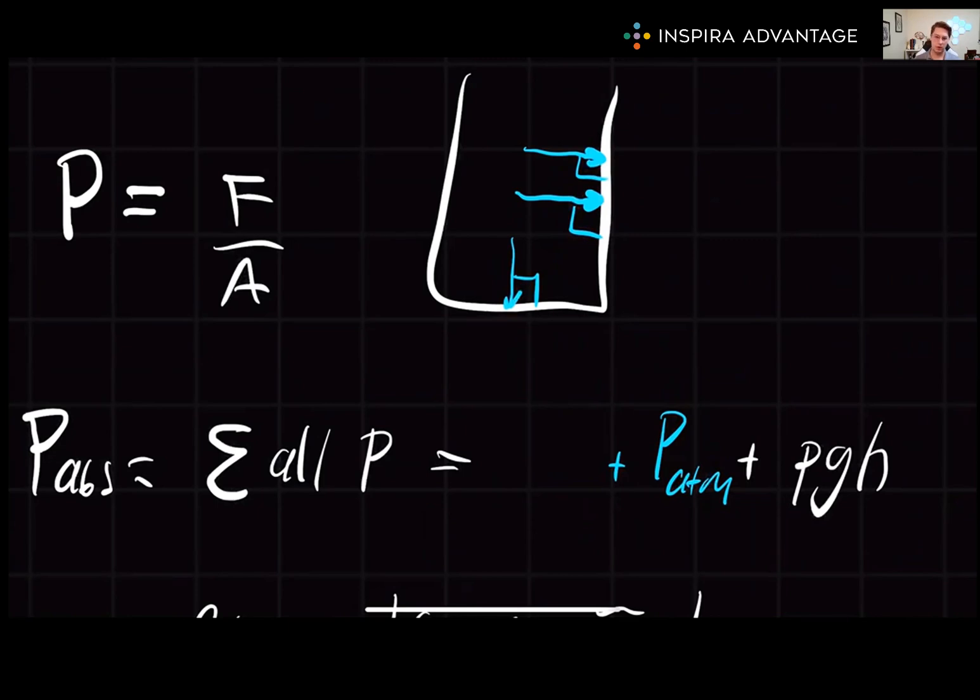Now let's talk about a subsection of pressure, absolute pressure. This is the sum of all pressures at a certain point within a fluid, and it is equal to the pressure at the surface of the fluid plus the pressure due to the fluid itself. The formula to calculate this is absolute pressure equals the pressure of the atmosphere plus rho gh, where P atmosphere is the pressure due to atmospheric pressure.